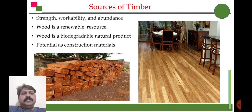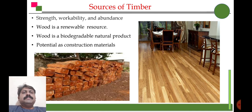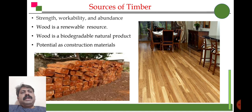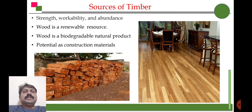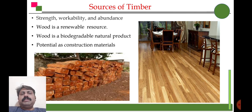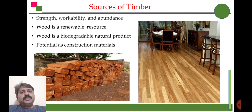The next resource is timber. We get timber from plants. Timber extracted from plants has more strength and workability — meaning we can design anything on wood extracted from plants. Plants are available in abundance. Most importantly, plants are renewable sources, so we can renew plant species. Plants are biodegradable in nature, so after use, if the materials are no longer useful, we can recycle them.